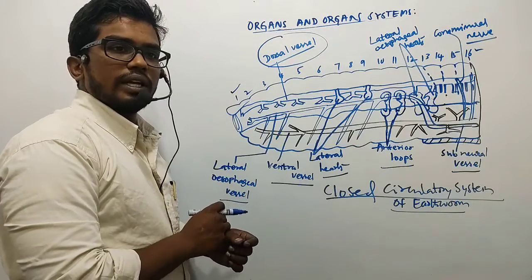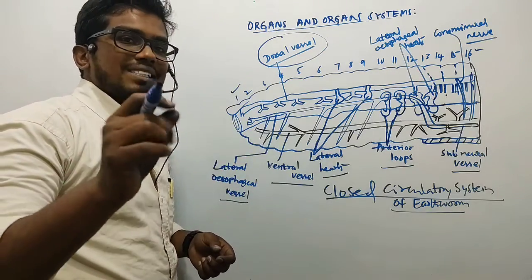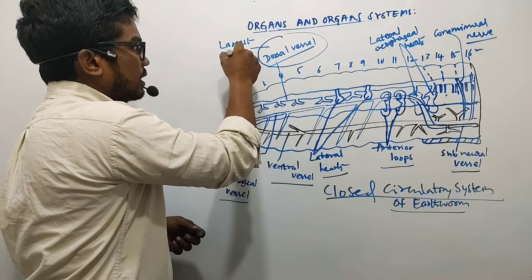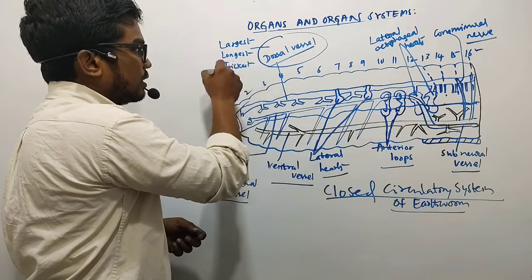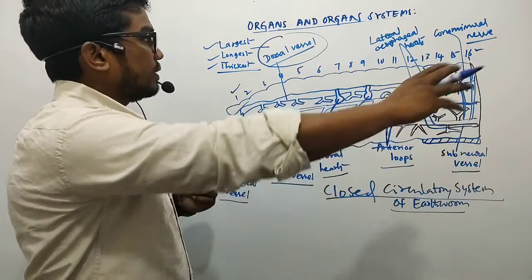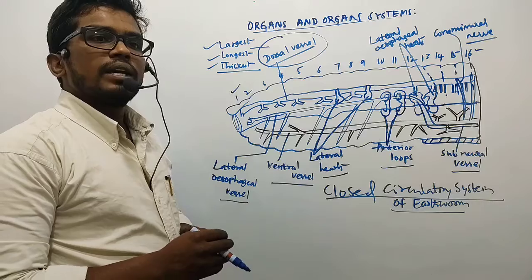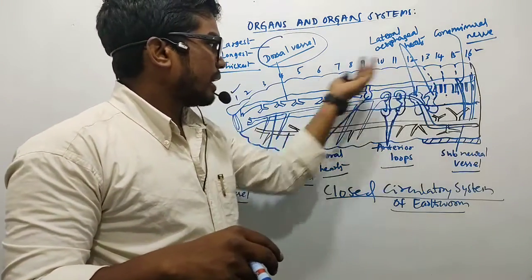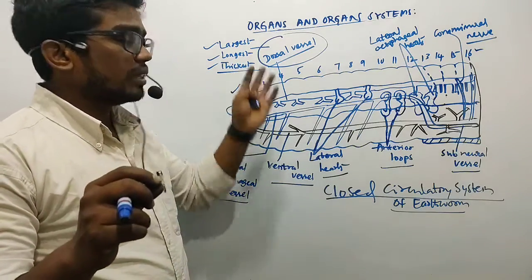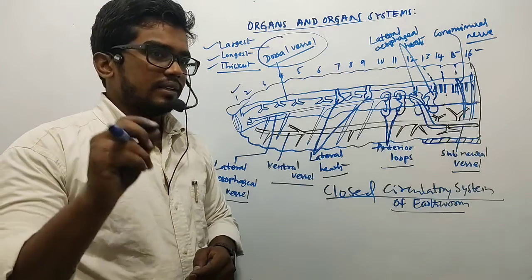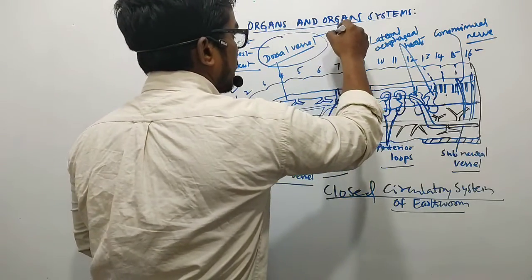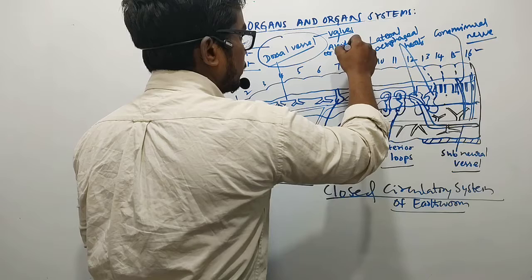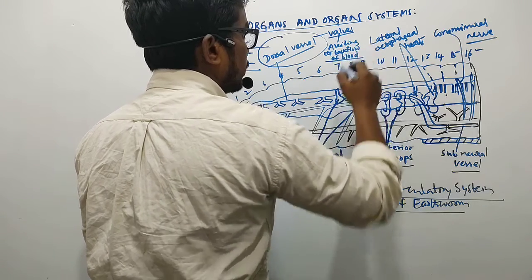The dorsal blood vessel is the largest, longest, and thickest blood vessel. The blood flows in it from back to front (posterior to anterior). Valves are present in the dorsal blood vessel, which help in avoiding the backflow of blood.